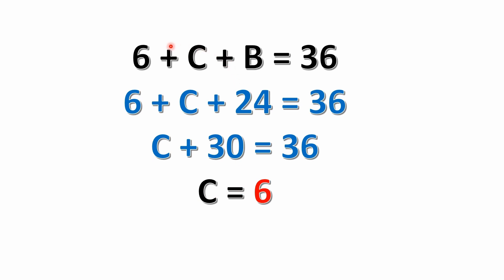Then after that, we have equation 6 plus C plus B equals 36. Well, 6 plus C plus 24. We're going to substitute the value of 24 that we just found for B. So that equals 36. Now we can simplify this a lot further by just adding the 6 and the 24, which gives us C plus 30 equals 36.